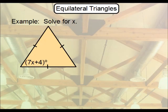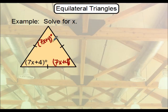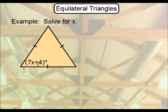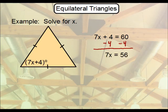Let's do an example — solve for X. This is an equilateral triangle because all three sides are marked, and one angle is given as 7x plus 4. Since all three angles are congruent and each measures 60 degrees, you can set 7x plus 4 equal to 60. You could also write 7x plus 4 for each angle and total them to 180 — you'd get the same answer. From here it's just algebra: subtract 4 from both sides, then divide by 7. X equals 8.